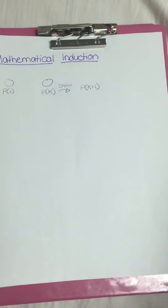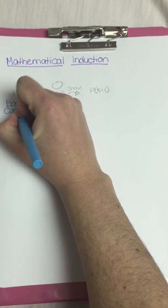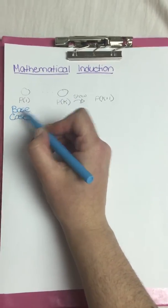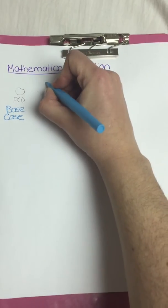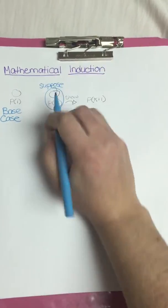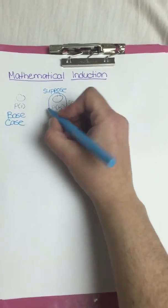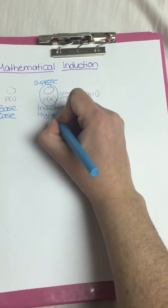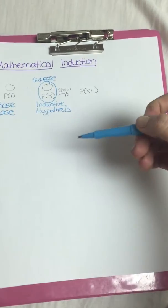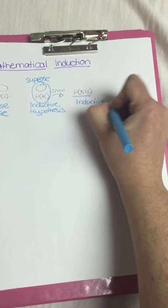So this here is called the base case. It's your first case, the first thing you do. So then you're going to take this and you're going to suppose it's true. You don't know it, you're just going to proceed with your life as if this is true. This is called the inductive hypothesis. You're just going to suppose it's true, you're hypothesizing it's true. And then showing that this next case is true, this is going to be your inductive step.